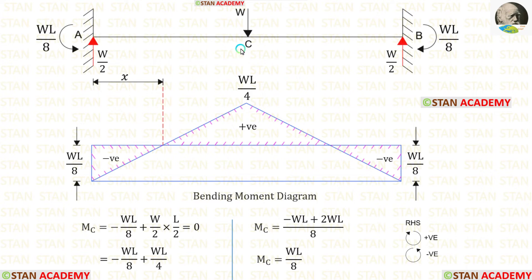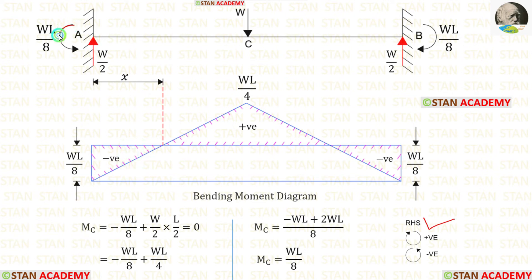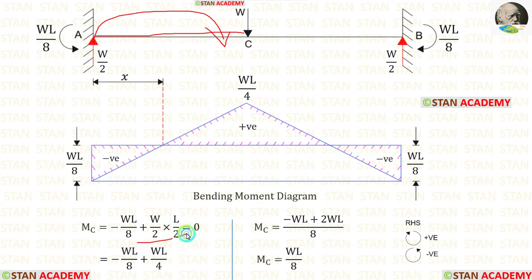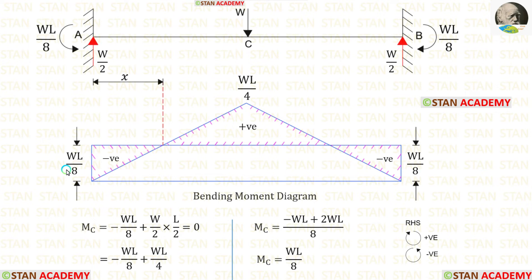Now let us calculate the moment at point C, that is at the center, calculating from point A. MA acts in the anti-clockwise direction, so it is negative. The reaction acts over a distance of L/2. Finally, for MC we are getting WL/8. Alternatively, we can calculate MC by subtracting WL/8 from WL/4. In this way also, we get WL/8.